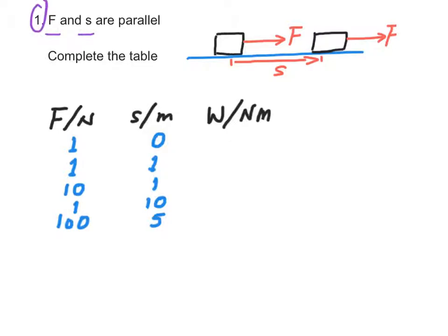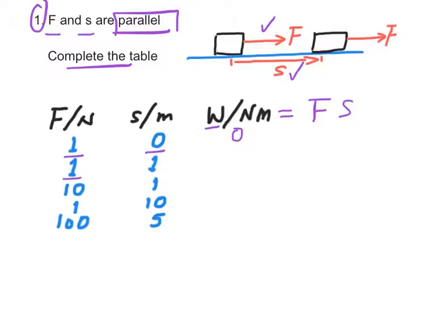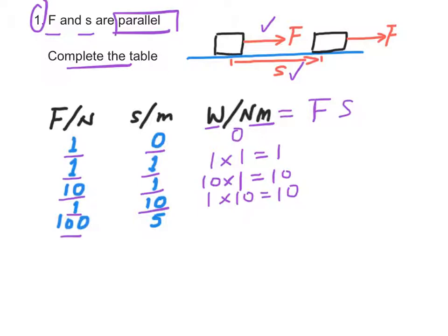When F and S are parallel and in the same direction, we can complete the table. If F is 1 and S is 0, the work done equals Fs which is 0. If F is 1 and S is 1, the work done is 1 Newton meter. For F equal to 10 and S equal to 1, the work done is 10 Nm. If F is 1 and S is 10, work is 10 Nm. If F is 100 and S is 5, work is 500 Nm or joules.